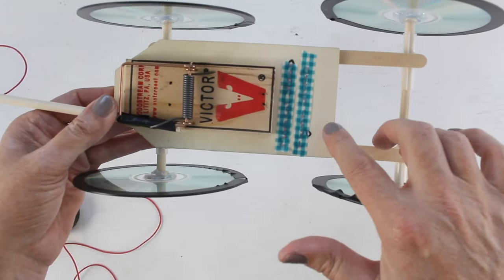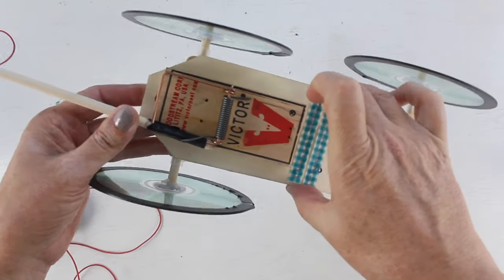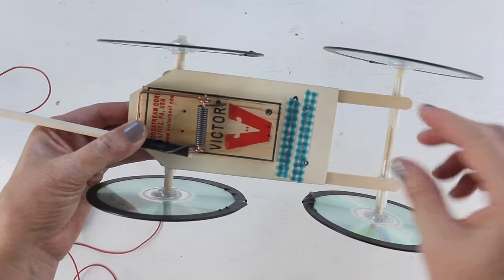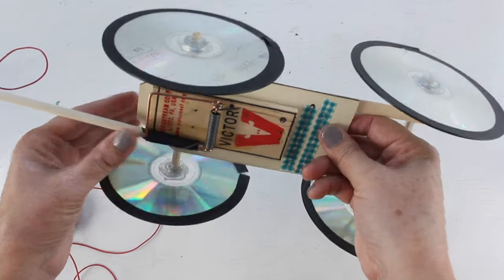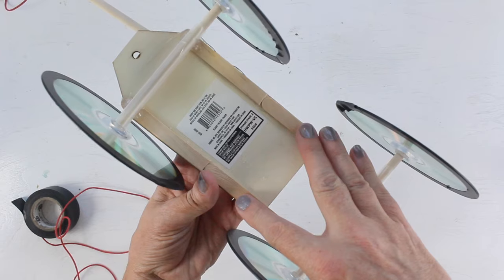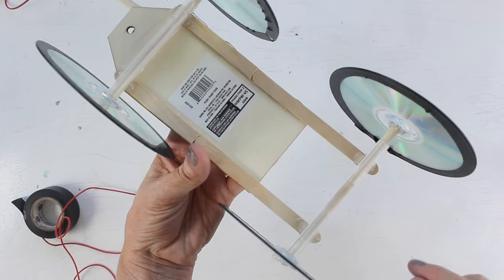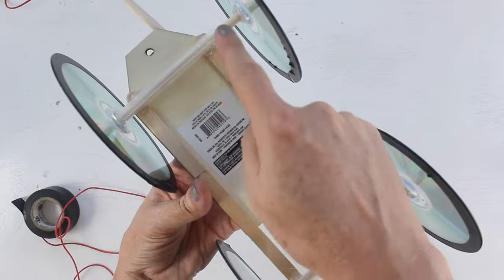What you need is a wood block right here. This was actually a wooden gift tag that I found in my craft supplies, but any piece of wood will do you just fine. Then you're gonna want four popsicle sticks. You want to cut two a little bit shorter than the others.